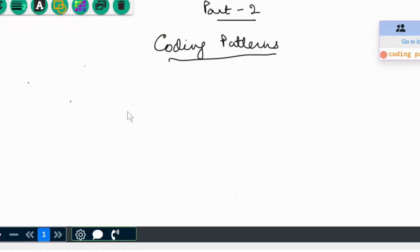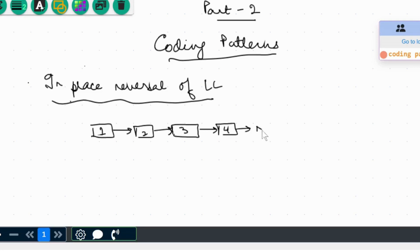The next coding pattern that we will discuss is the in-place reversal of a linked list. So in that, what we have to do, suppose there is a linked list given to us, something like this, 1, 2, 3, 4. This is the input linked list that we have. This is the head, as we know the starting node, and this is the tail node, which points to null.